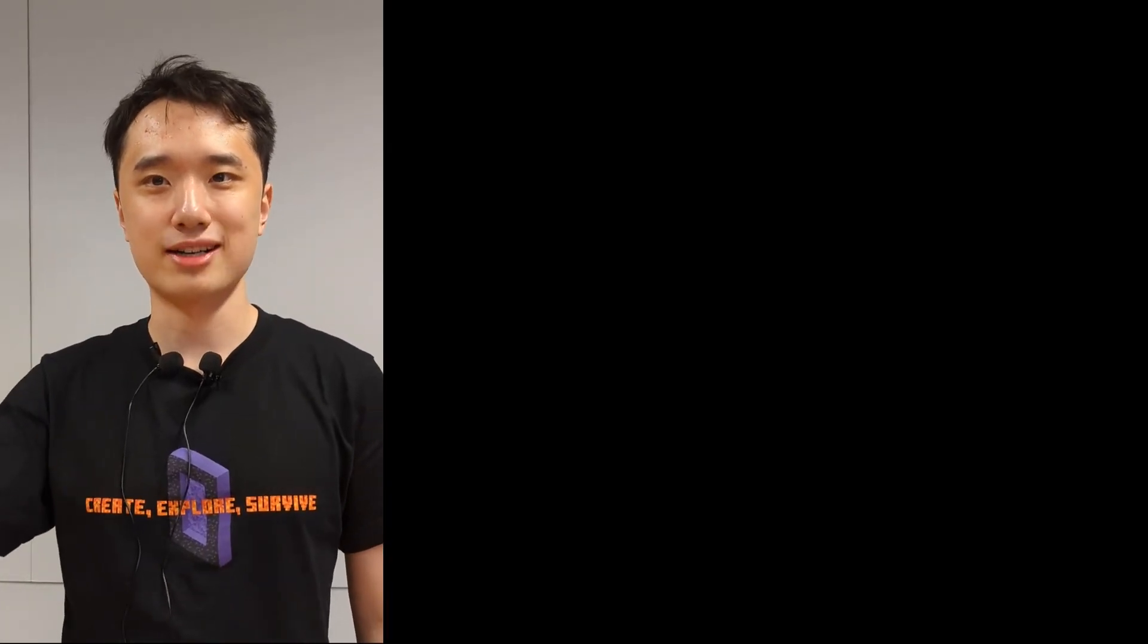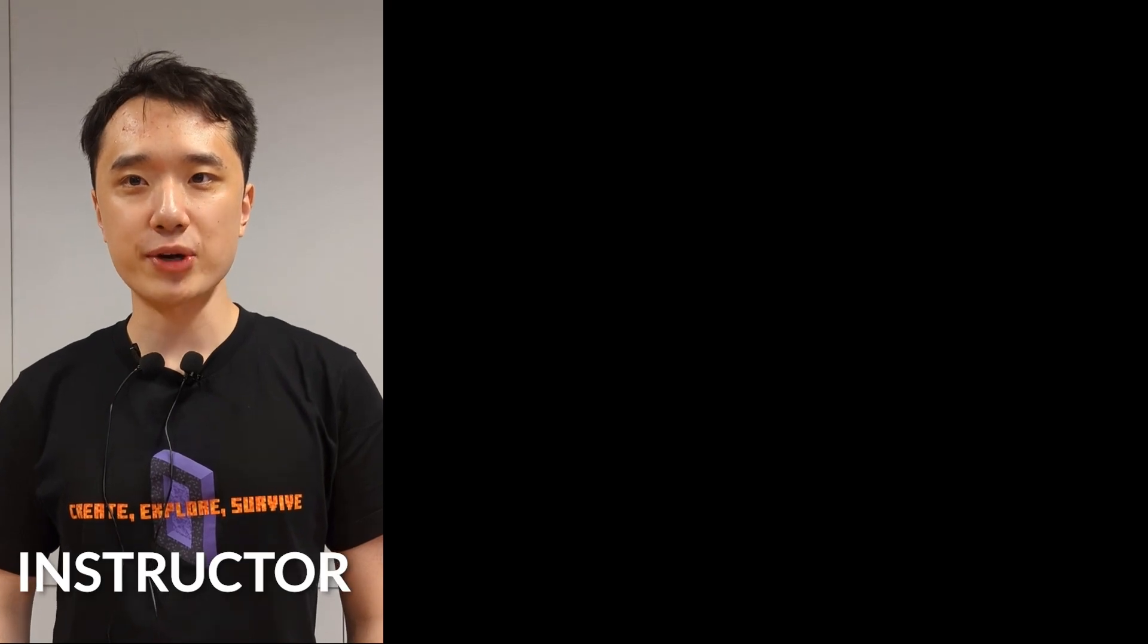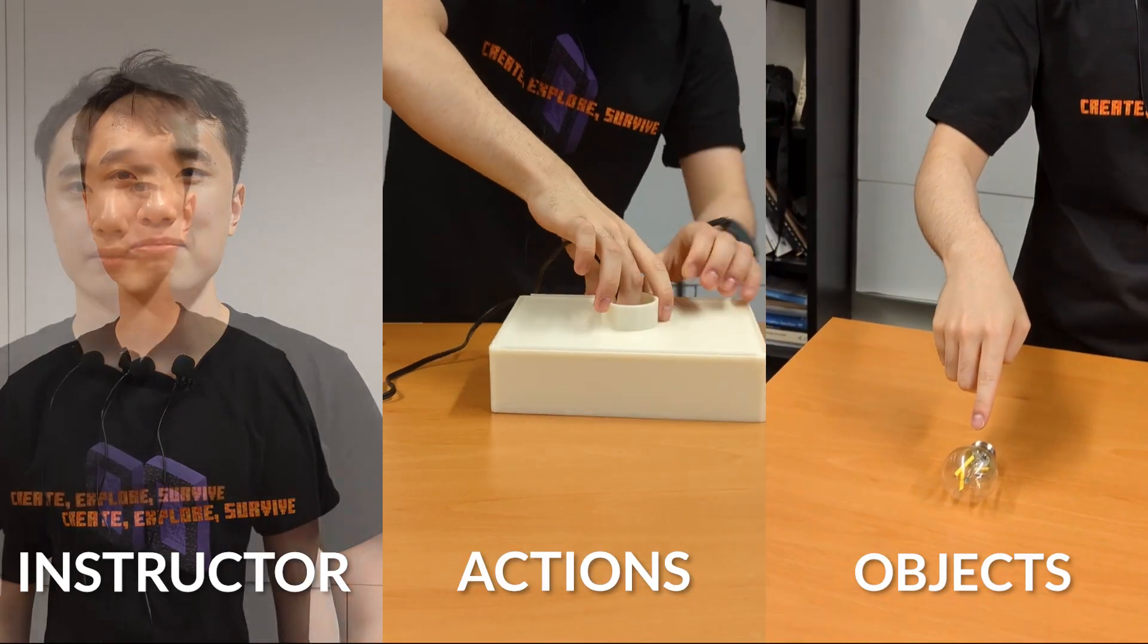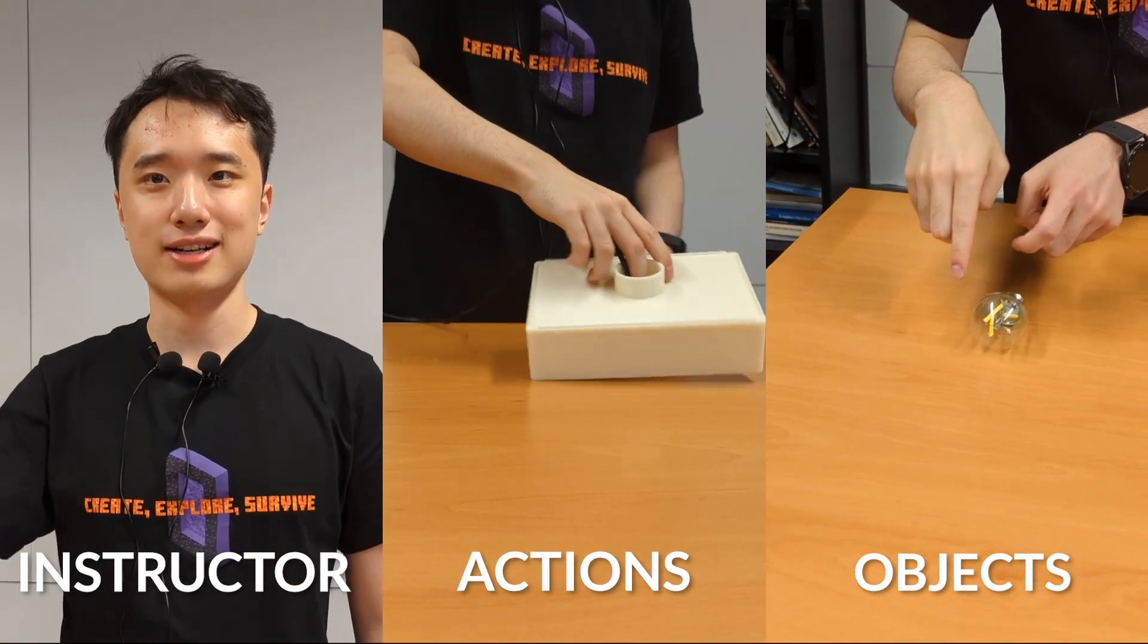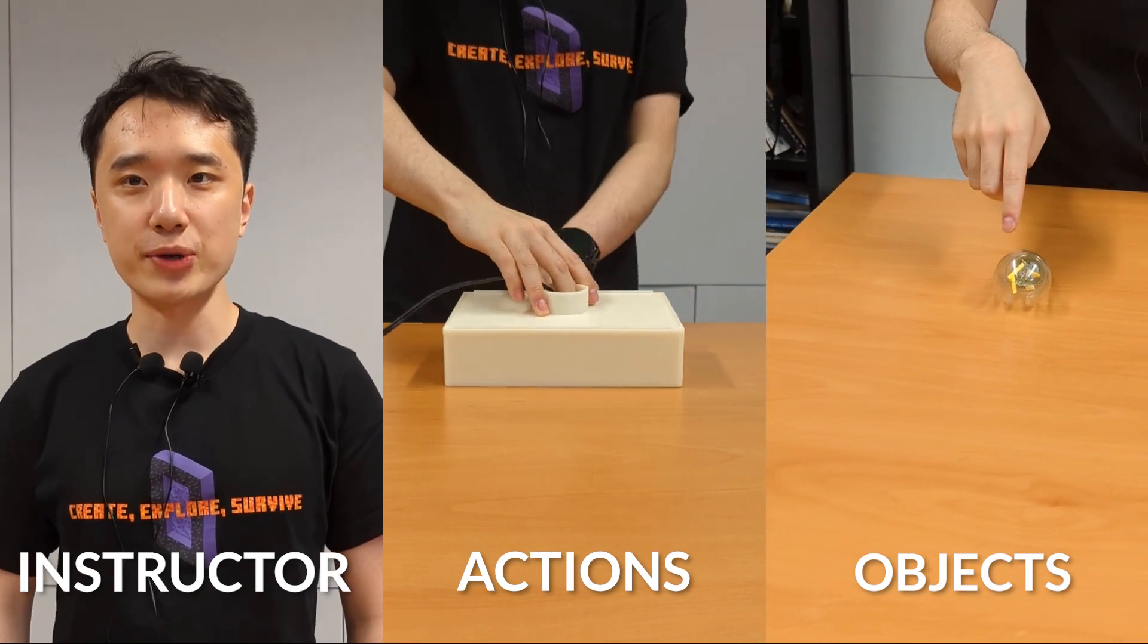Stargazer supports three types of shots: instructor shots, action shots, and object shots. In each type of shot, Stargazer automatically follows the subject of interest.